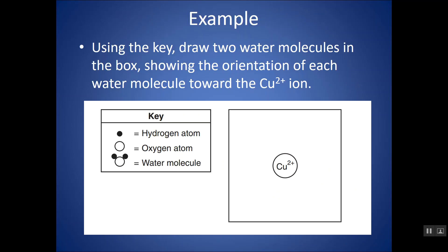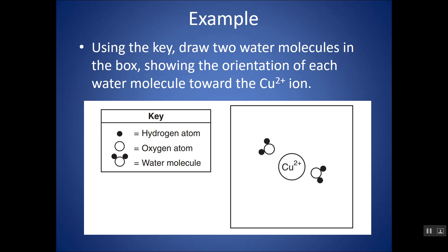Here is Cu2+. If I have a water molecule, which is a polar molecule, the oxygen is more electronegative than the hydrogen. So the oxygen will have a slight negative charge and the hydrogens will have slight positive charges. The oxygens would be aligned toward the Cu2+, so the hydrogens should be pointing out and the oxygen side should be facing in toward the copper ion.